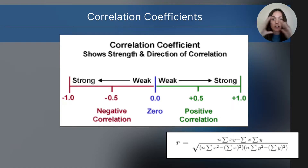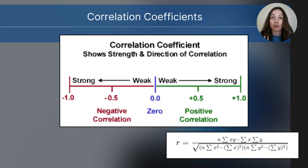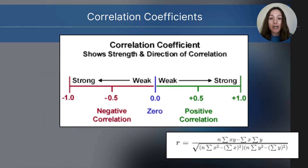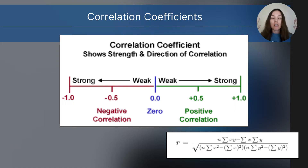On a continuum from negative one to positive one: if the correlation coefficient is close to positive one, the variables have a strong positive correlation; if it is exactly positive one, there's a perfect positive correlation. Negative one represents a perfect negative correlation between the two variables, and a zero correlation coefficient means there's no relationship. One tip: students sometimes see negative one and think there's no relationship — that is not true. The ones, whether negative or positive, represent relationships; the sign tells you the direction, and zero represents no relationship.